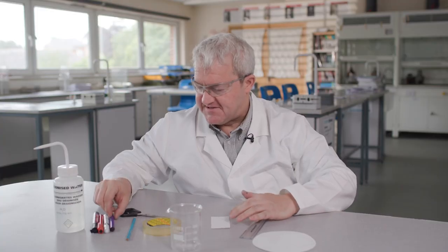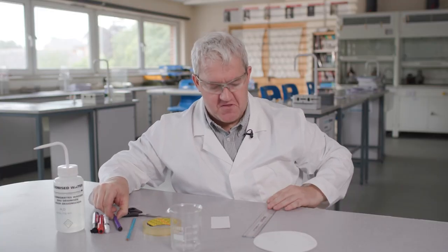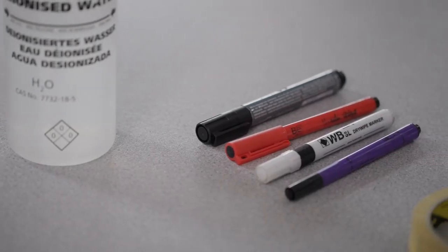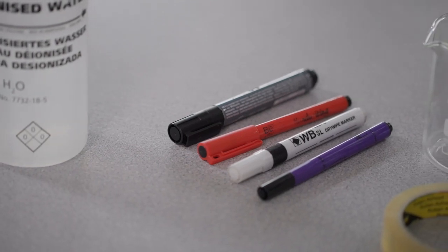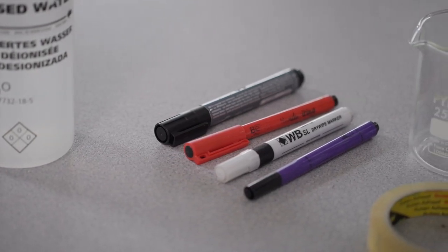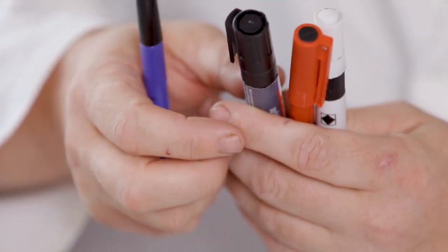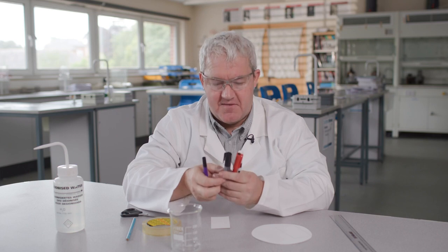Now the next part is to dot the inks on the chromatography paper. Now I've got four marker pens here. Two are marker pens and another two are felt tip pens. It's very important that they are non-permanent markers. Permanent markers won't run in the water solvent.